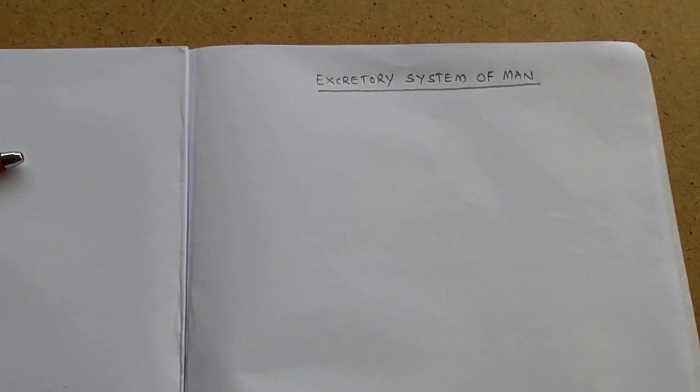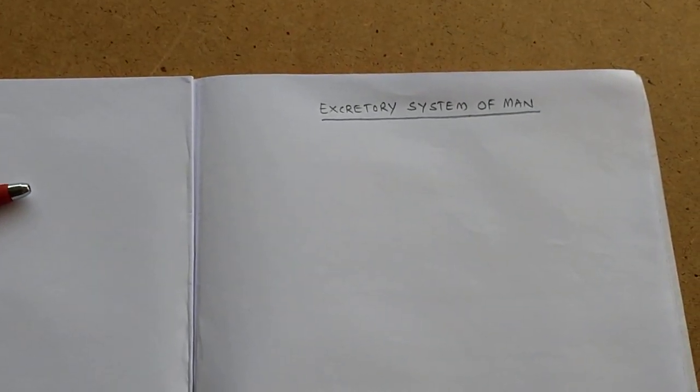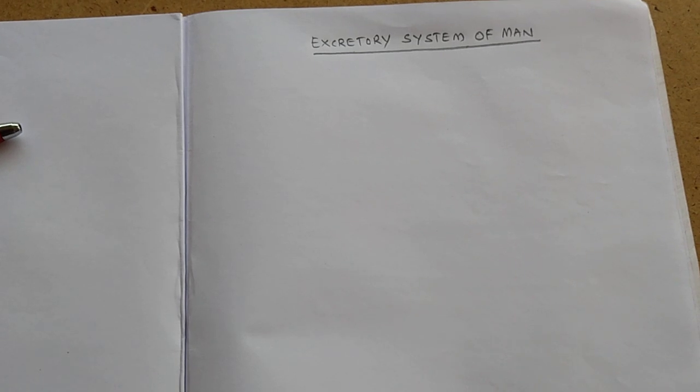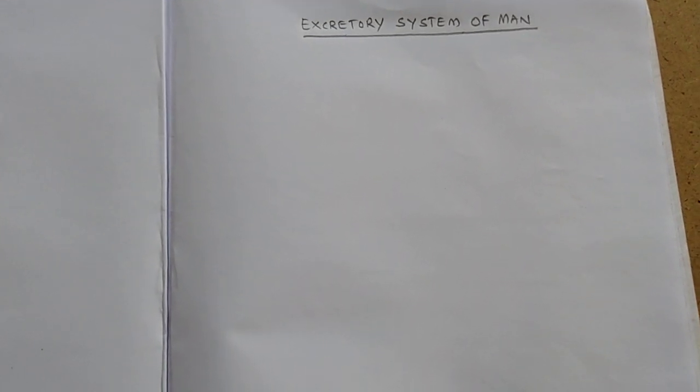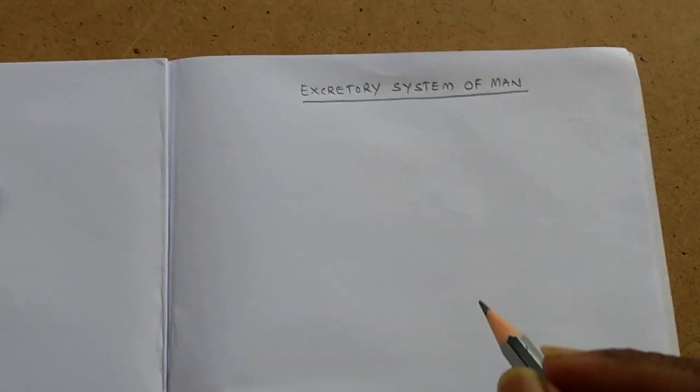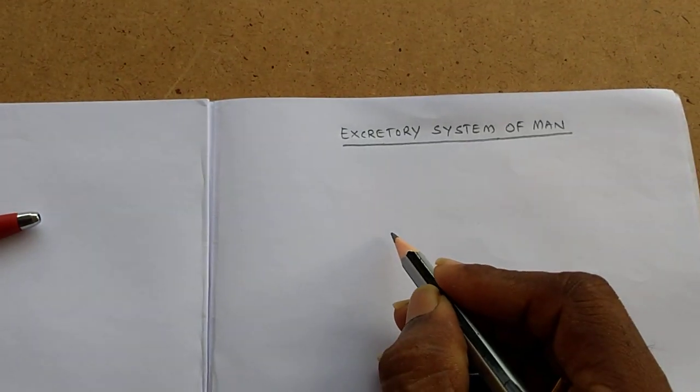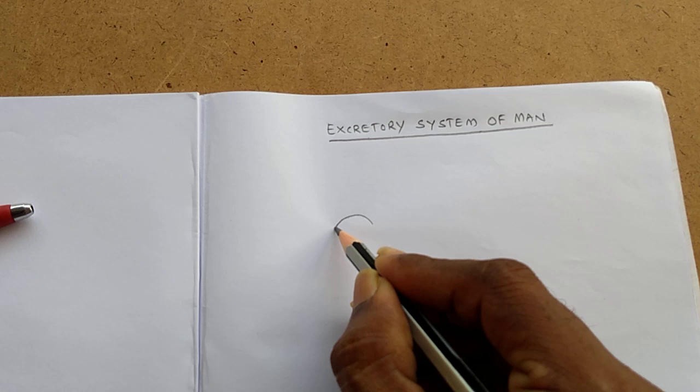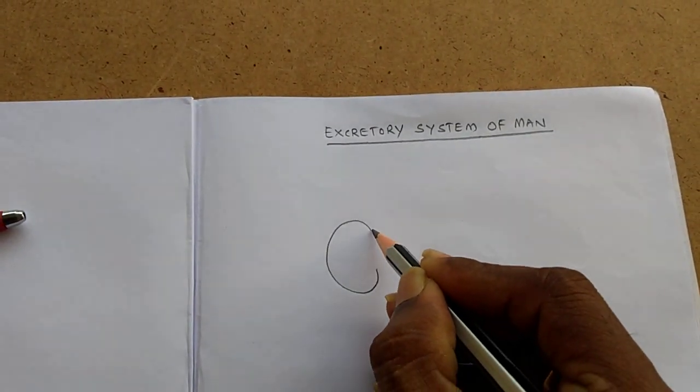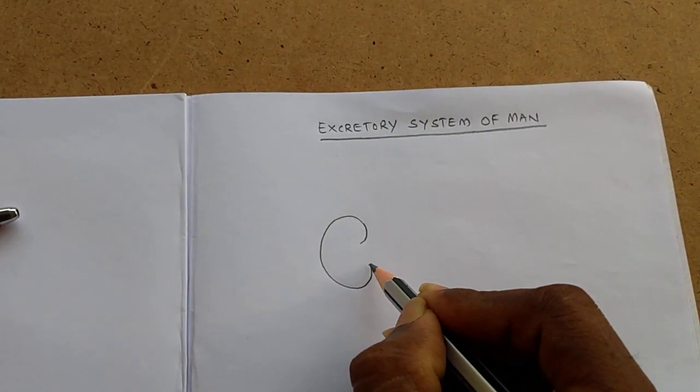Hi friends, in this video we are going to learn how to draw the human excretory system. The human excretory system contains chiefly two bean-shaped kidneys.